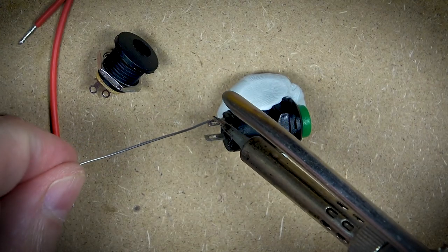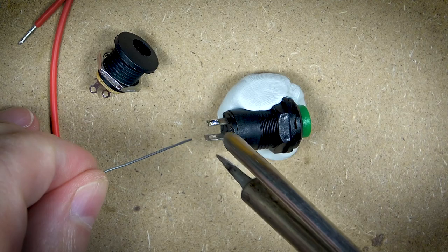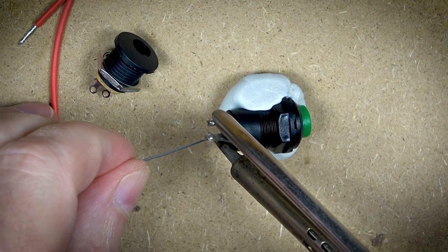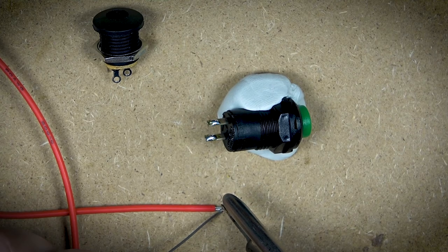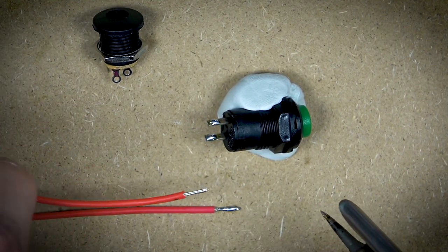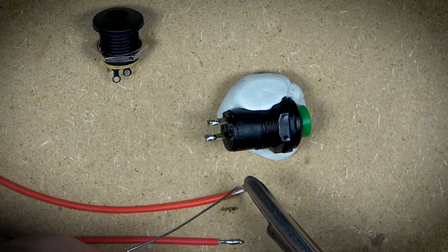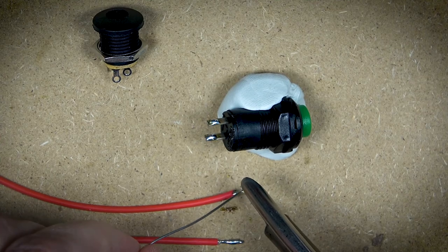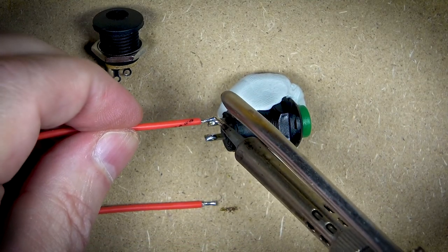Switching over to the switch - no play on words intended. I am going to pre-tin. Now the switch is interrupting the flow on the positive, so in this case I'm using both red wires. Just to help when I start to bring all of these components together, help me visually understand what's going on.